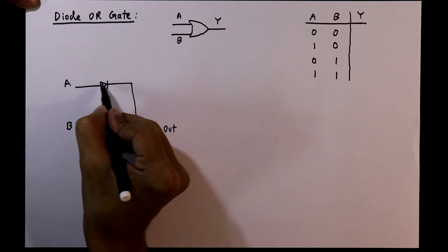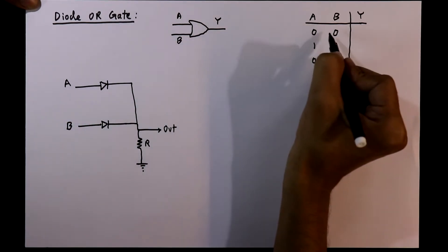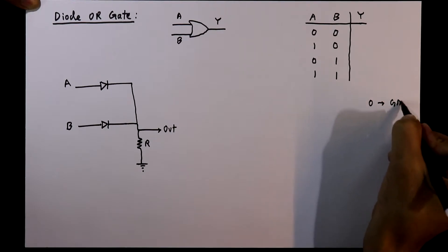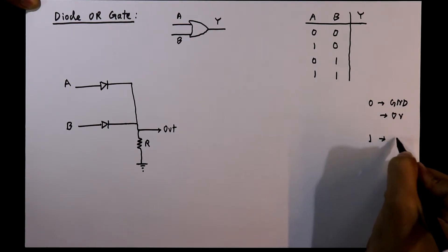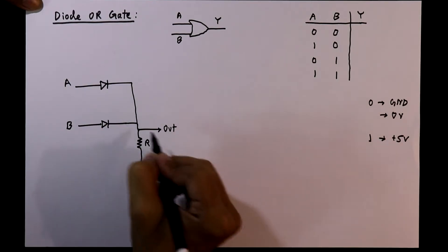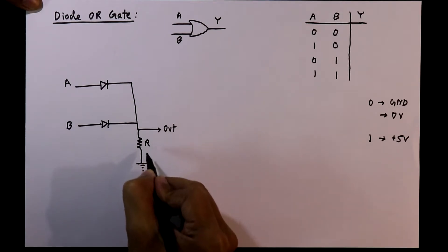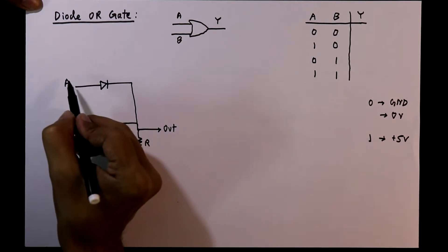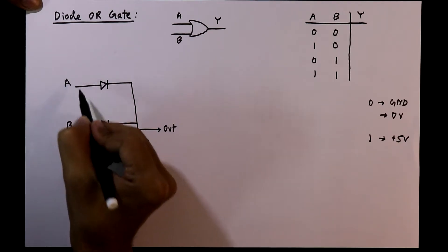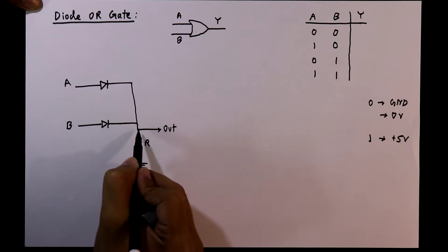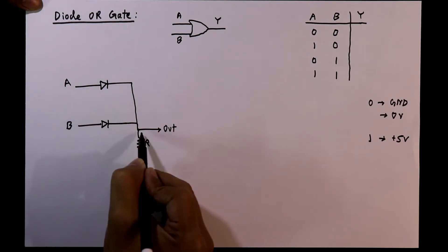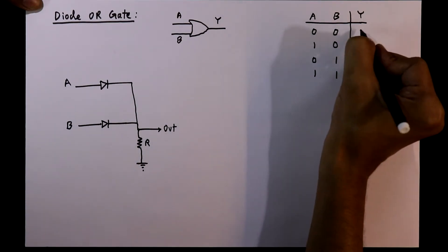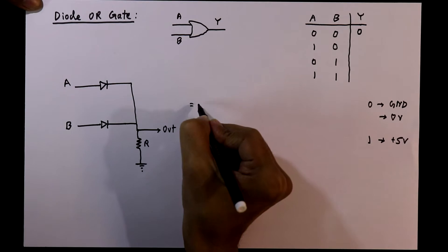This side is the diode anode and this side is the cathode. For the first condition, both inputs are zero. Zero means ground or zero volts, and one means five volts. We have connected a pull-down resistor at this point, so this point is already zero. We are not applying any voltage at either input, so the potential difference is zero and there is no current flow through the circuit. As a result, we get output zero.